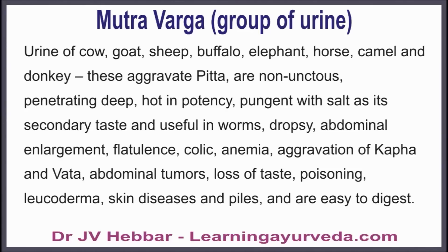Mutravarga or group of urine: urine of cow, goat, sheep, buffalo, elephant, horse, camel, and donkey aggravate pitta. They are non-unctuous, penetrate deep, hot in potency, and are pungent with salt as the secondary taste. They are useful in worms, dropsy, abdominal enlargement, flatulence, colic pain, anemia, aggravation of kapha and vata, abdominal tumors, anorexia, poisoning, leukoderma, skin diseases, and piles. They are easy to digest.